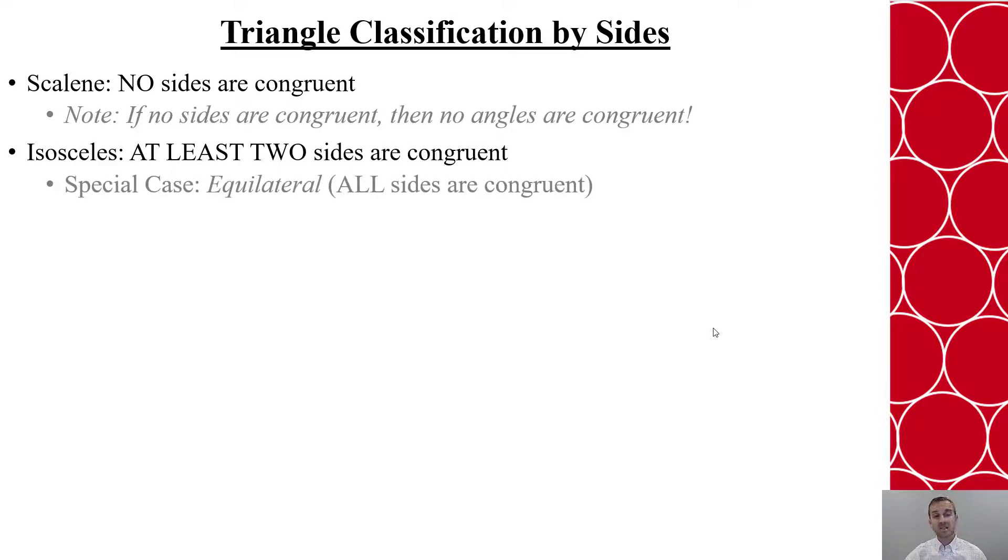Also, the isosceles triangle means that at least two sides are congruent. And the special case here is the equilateral triangle, where all sides are congruent. These are not separate cases. The equilateral is a special case of isosceles. So always remember that it's a group within a group.